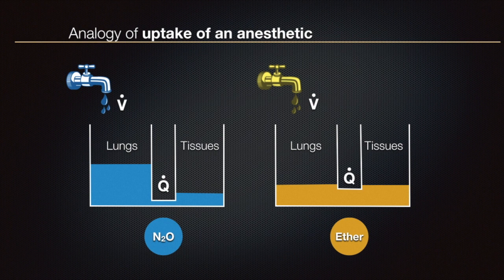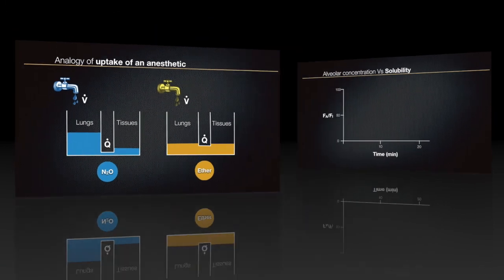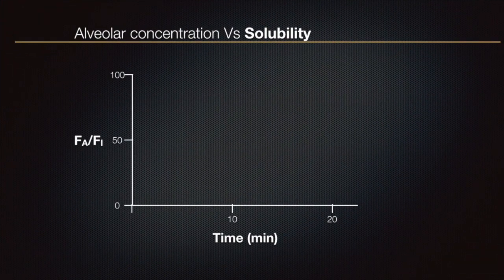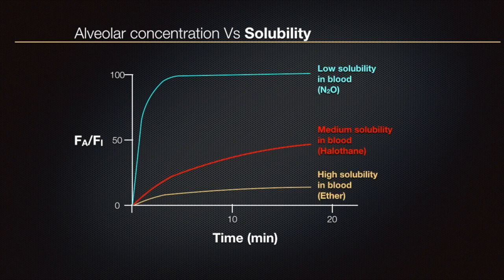Build-up of adequate alveolar concentration will take more time in the case of ether because of its high blood-gas partition coefficient. Let us examine the graph illustrating the build-up exponential curves produced if alveolar concentration of anesthetics is expressed as a percentage of their inspired concentration (FA/FI) and plotted against time. It is seen that soluble anesthetics such as ether are very slow to build alveolar concentration. Because the concentration of anesthetics in the blood and brain are close to alveolar concentration, there is a rapid onset of anesthesia with nitrous oxide and a slow induction with ether.